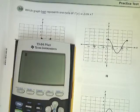This is the Algebra 2 practice test, question number 10. The question asks which graph best represents one cycle of 2 times the cosine of x.